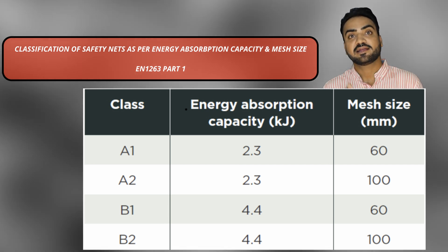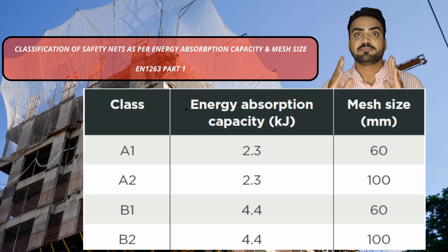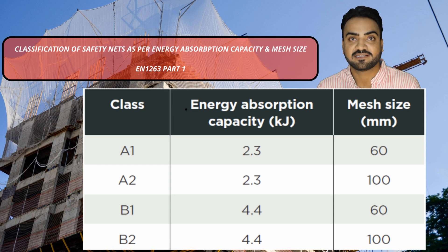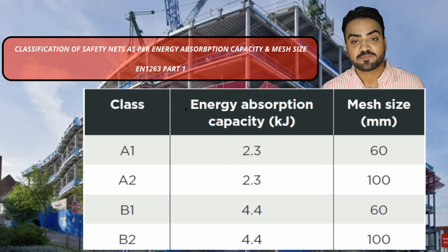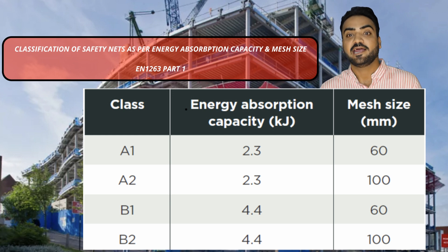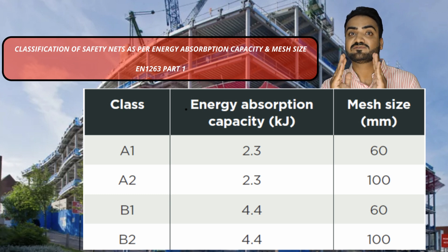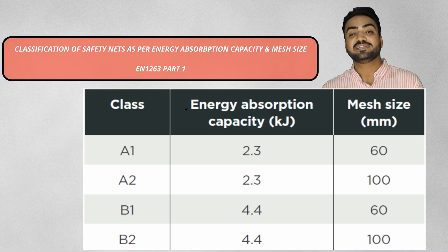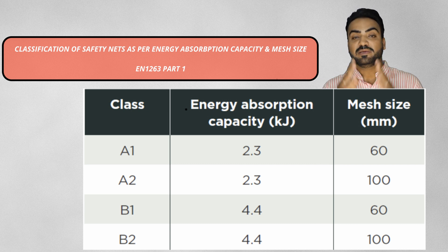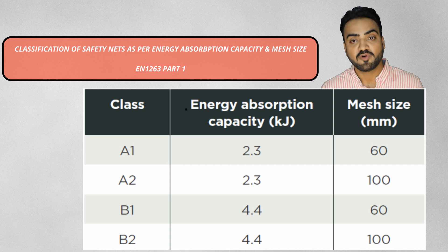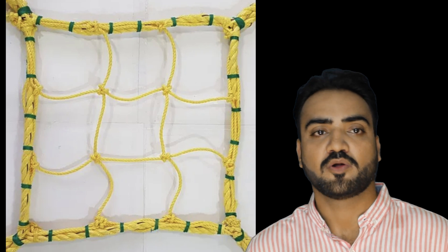In the classification table, A and B denote energy absorption capacity, while Class 1 and Class 2 denote mesh size. So A1 means energy absorption of 2.3 kJ and mesh size 60 mm. A2 means energy absorption 2.3 kJ and mesh size 100 mm. B1 means energy absorption 4.4 kJ and mesh size 60 mm. B2 means energy absorption 4.4 kJ and mesh size 100 mm.